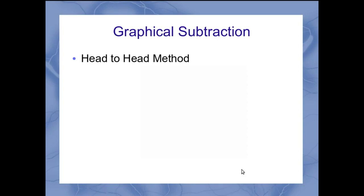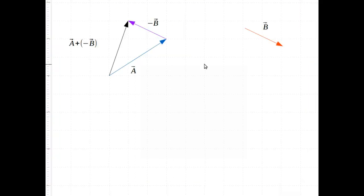But there's another method of doing graphical subtraction called the head to head method. Remember, in addition, it was a tail to head method. So let's see what that looks like. When we look at our second method of subtracting vectors, we want to be able to compare these two. So I'm going to take my vector over here and just move it slightly off to the side, and take my negative b and move it out of the way. And take a look at what happens if I use my head to head method.